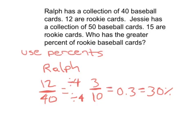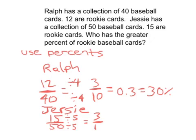If we do the same thing for Jesse, we'll start with Jesse's fraction, which is 15 out of 50. We can take that fraction back down to simplest form by dividing by 5 in the numerator and denominator to get 3 tenths, which is also equal to 0.3, which is also equal to 30%. They actually have the same percent of rookie baseball cards.